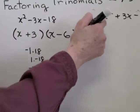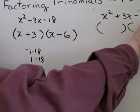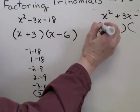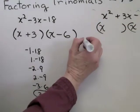Alright, let's try another one. Minus 10 is on the end, right? So I need factors of minus 10. I also need factors of x squared. That's easy, x times x. Factors of minus 10.